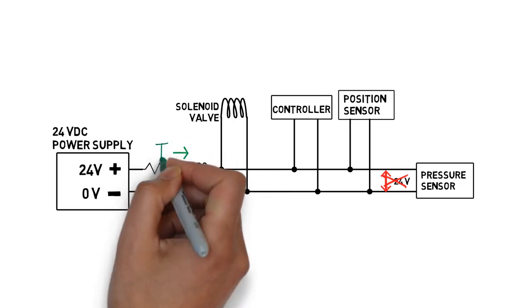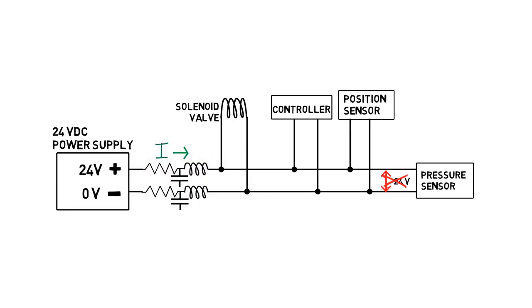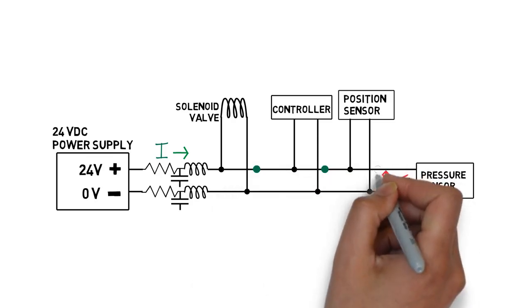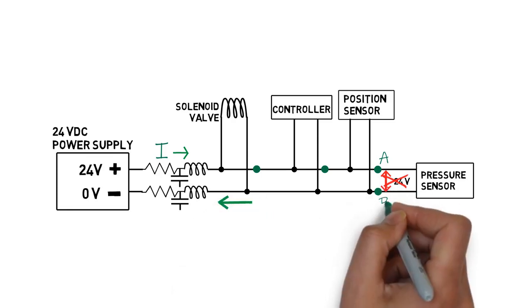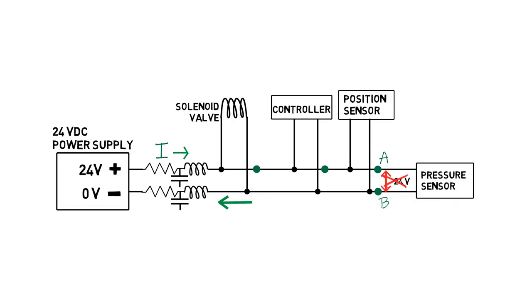This means that when a current flows, the voltages at various points in the wire are not the same. In our example schematic, if we have a current in the wire, the voltage at point A will now be less than 24 volts. The current also flows back to the power supply, so the return wire will have a different voltage, meaning that point B will be more than zero volts.